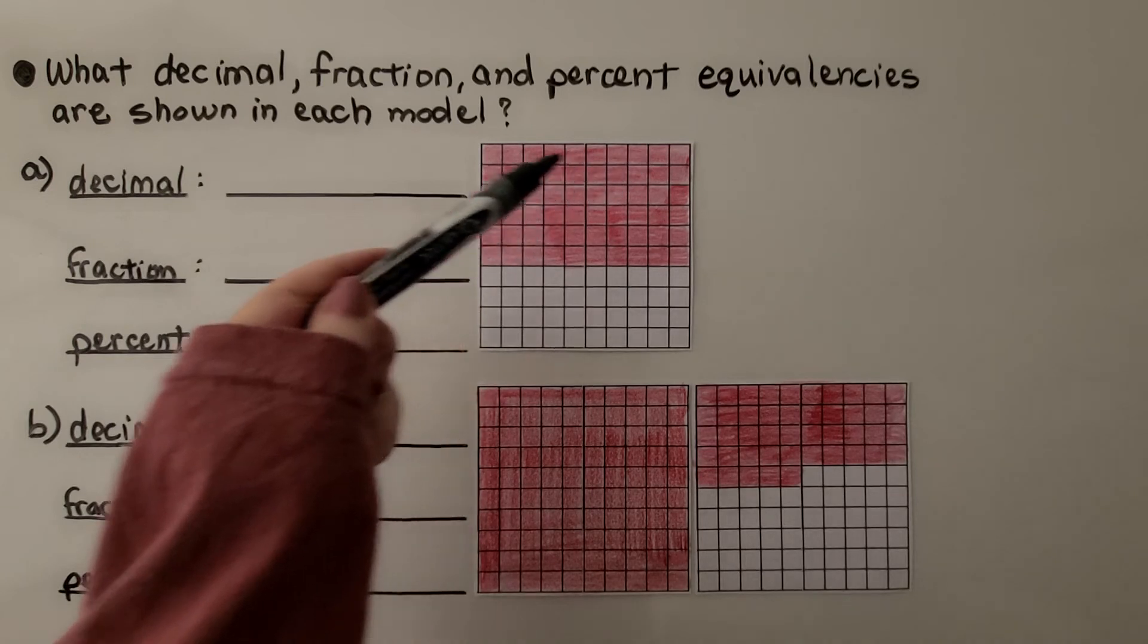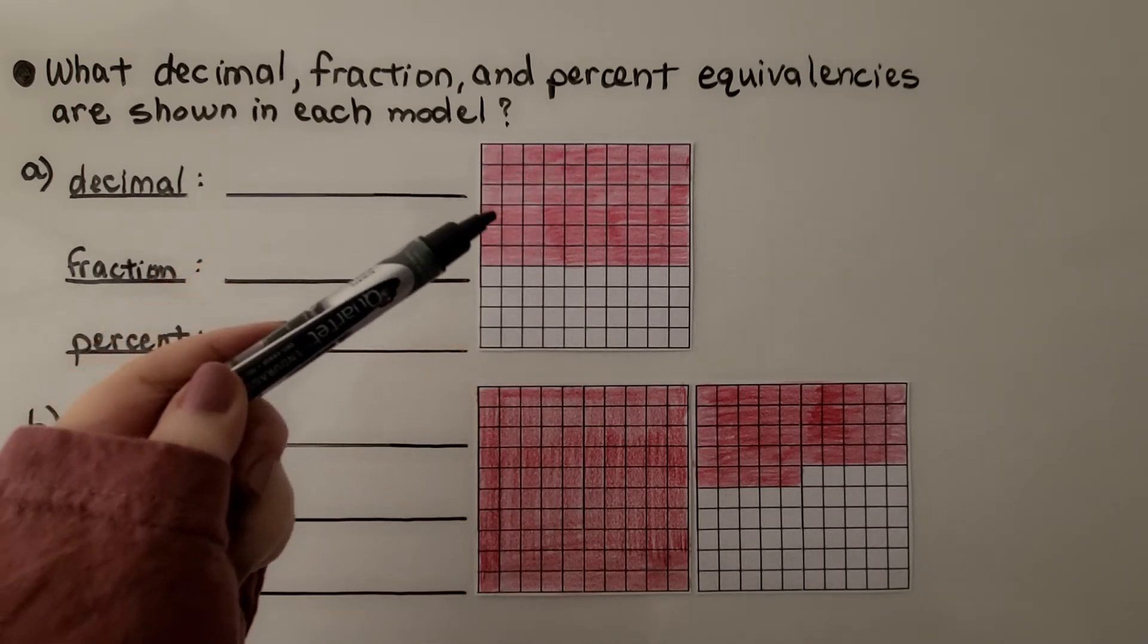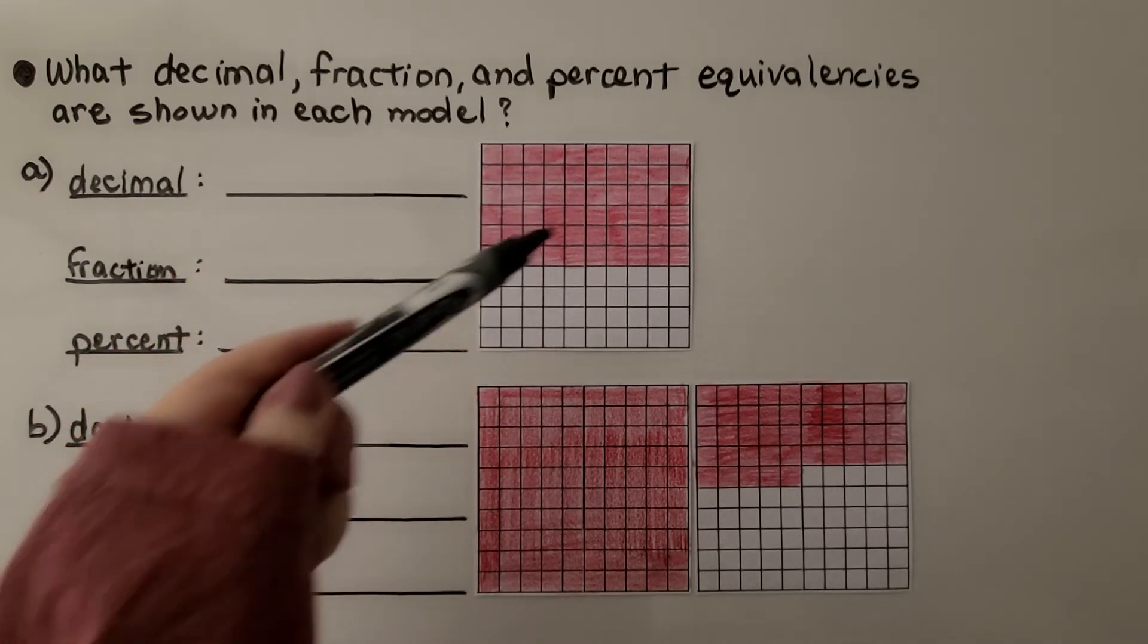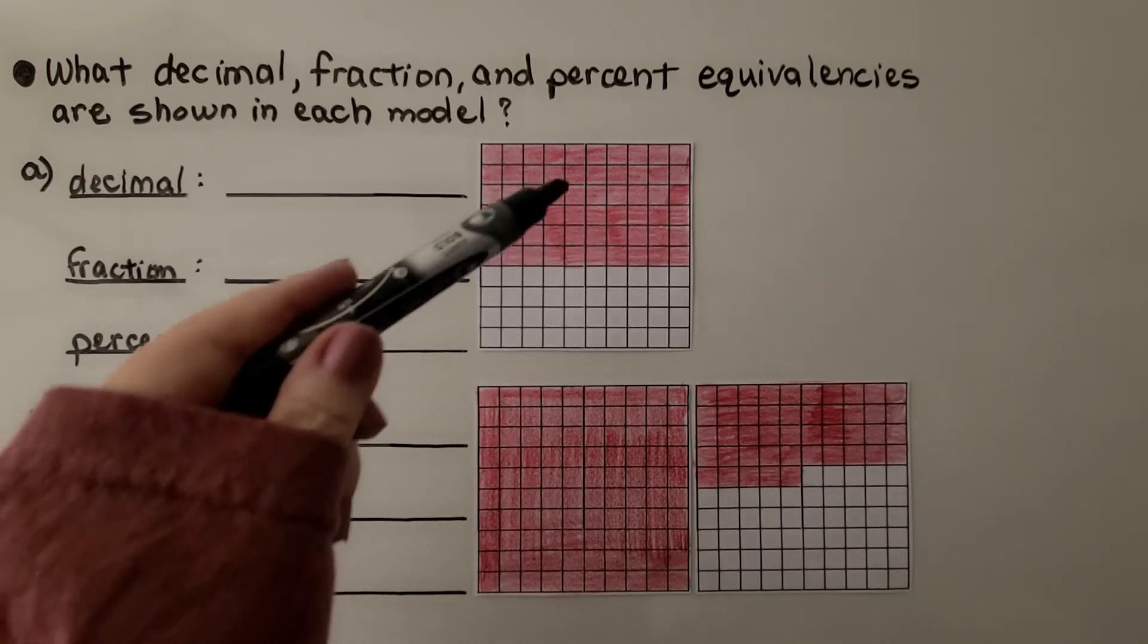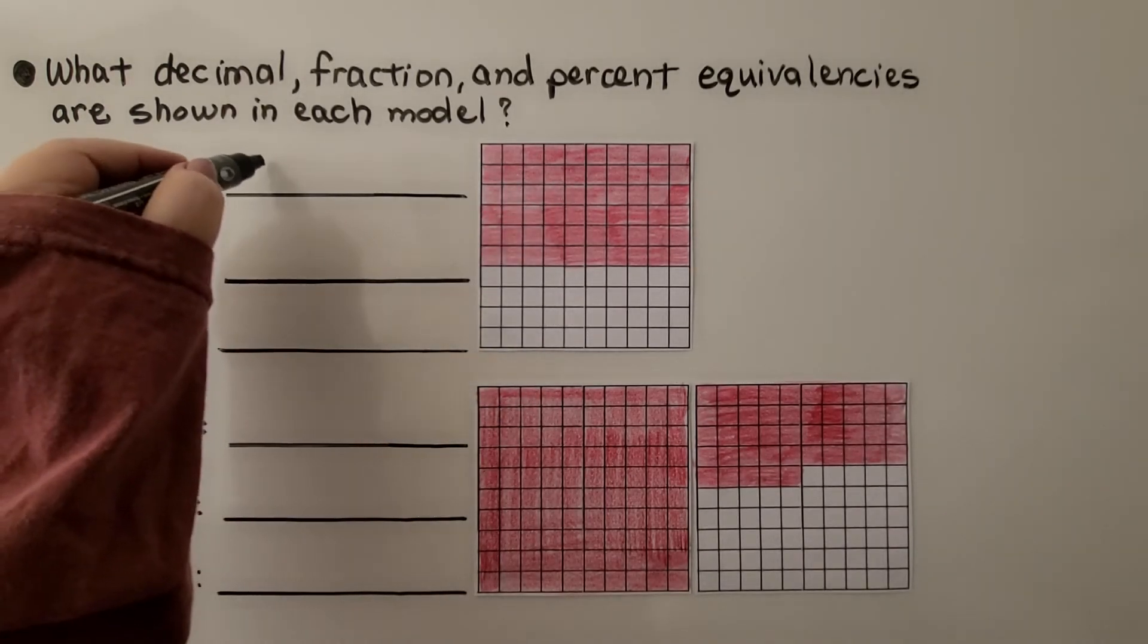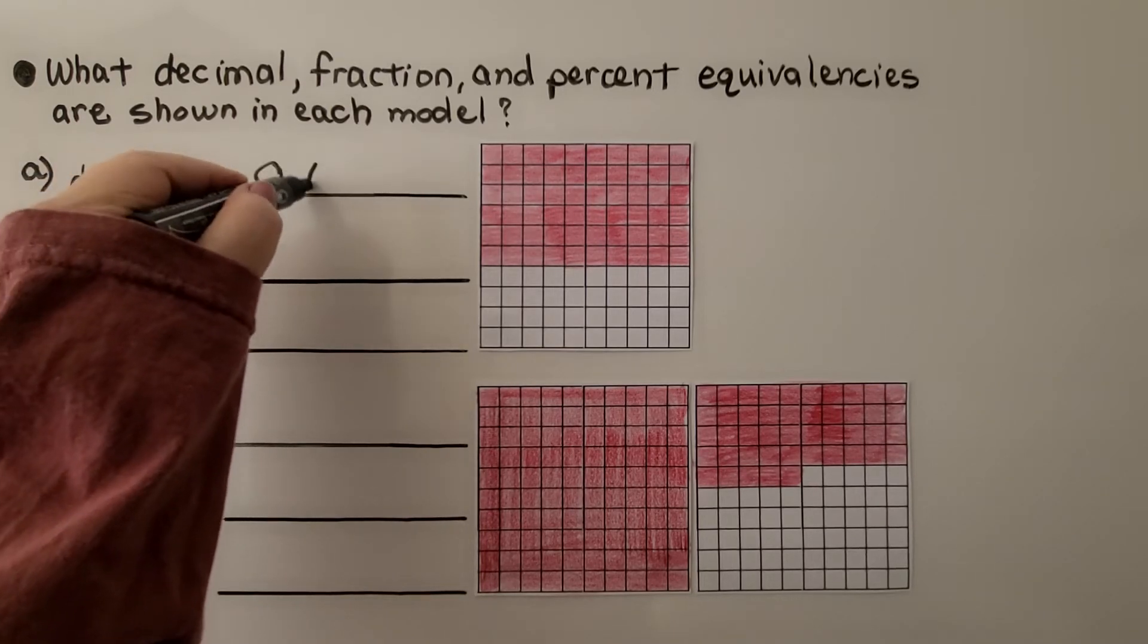When we look, we know there's 10 going across in each row. So that's 10, 20, 30, 40, 50, 60 out of 100. That's 60 hundredths. So we can write 0.60.